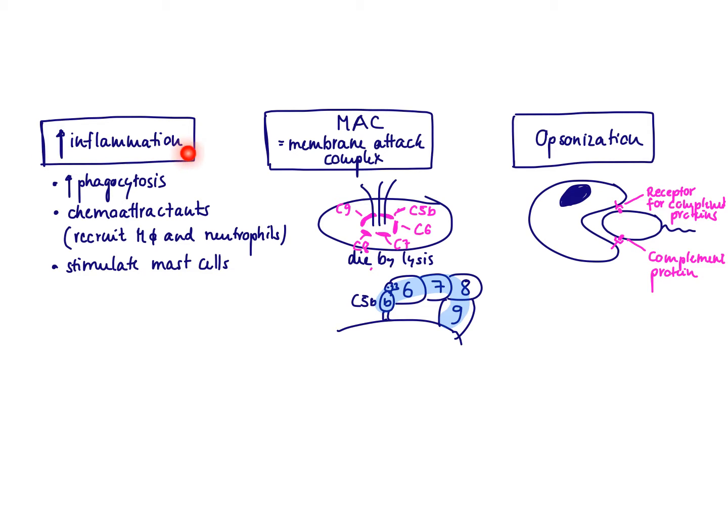Triggering inflammation: once some of the complement proteins are present, phagocytosis is increased, so the macrophage can eat up material even better. They also serve as chemoattractants, helping to recruit further macrophages and neutrophils. And they are very effective in stimulating mast cells — once mast cells get stimulated, they degranulate and release histamine, which is another very important trigger for inflammation.